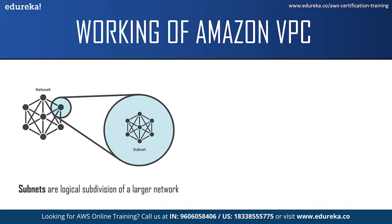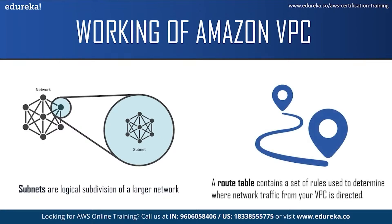An interesting point is that IP addresses of all subnets in a network will start with the same prefix. Next, we have the route table. A route table contains a set of rules called routes that are used to determine where the traffic in a VPC is directed. You can explicitly associate a subnet with a particular route table; otherwise, the subnet is implicitly associated with the main route table.